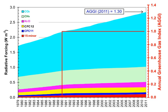The average residence time of a water molecule in the atmosphere is only about 9 days, compared to years or centuries for other greenhouse gases such as CH4 and CO2. Thus, water vapor responds to and amplifies effects of the other greenhouse gases. The Clausius–Clapeyron relation establishes that more water vapor will be present per unit volume at elevated temperatures. This and other basic principles indicate that warming associated with increased concentrations of the other greenhouse gases also will increase the concentration of water vapor, assuming that the relative humidity remains approximately constant. Modelling and observational studies find that this is indeed so. Because water vapor is a greenhouse gas, this results in further warming and so is a positive feedback that amplifies the original warming.